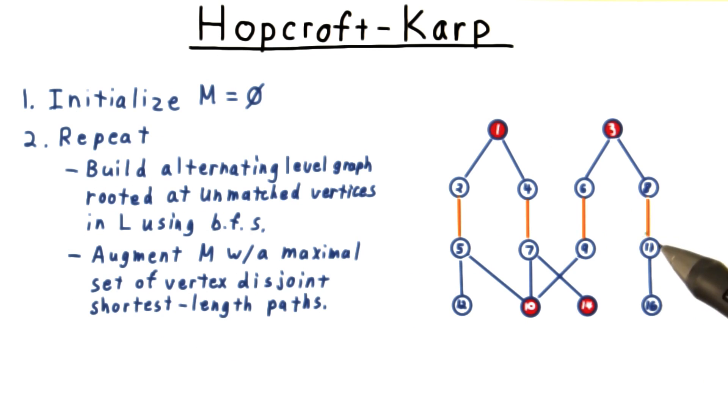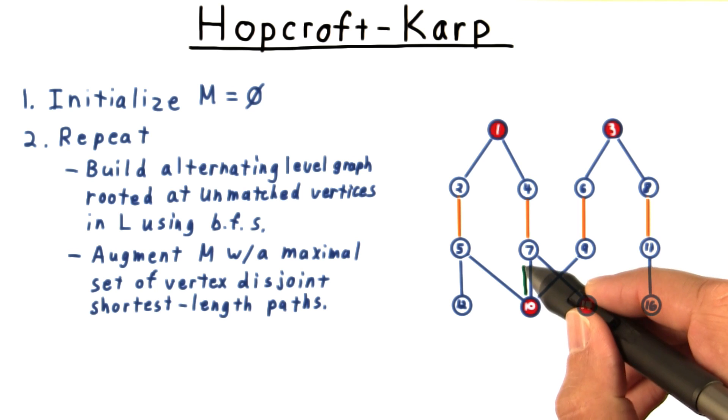Having built this level graph, we use it to augment the current matching with a maximal set of vertex disjoint shortest augmenting paths. We accomplish this by starting at one of the unmatched vertices in R and tracing our way back. Let's say that I use this path here.